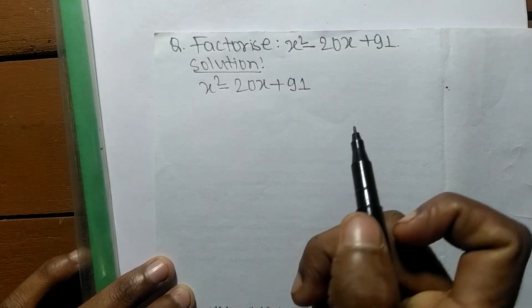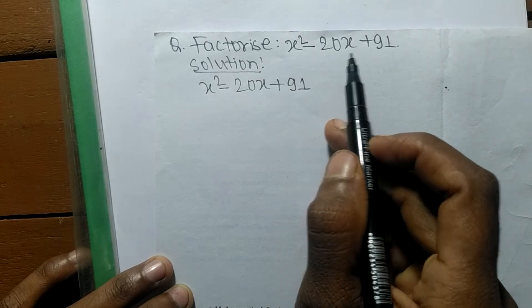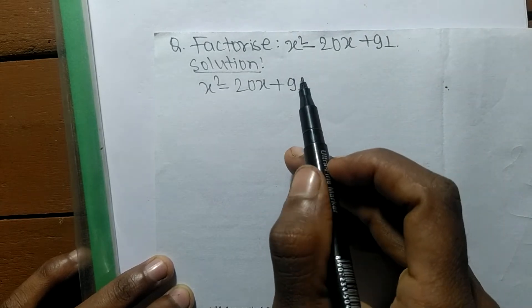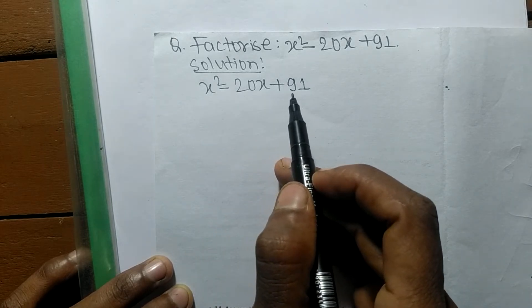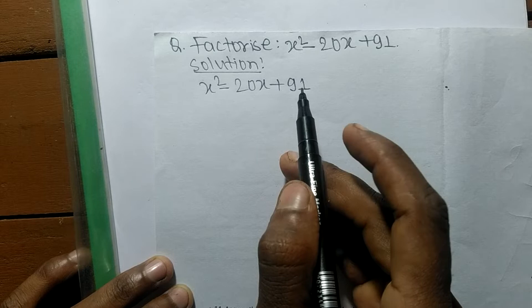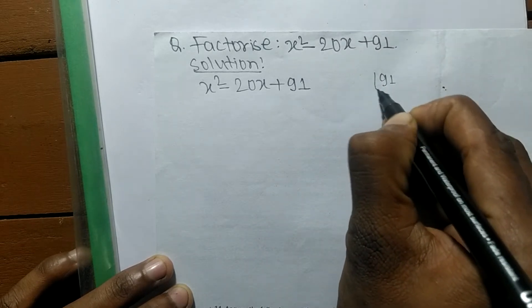So today in this video we shall learn to factorize x² - 20x + 91. For the solution of x² - 20x + 91, first we have to find out the prime factors of 91.